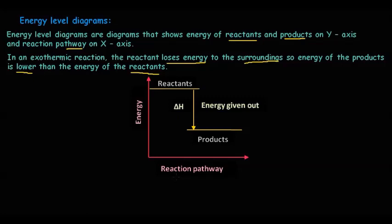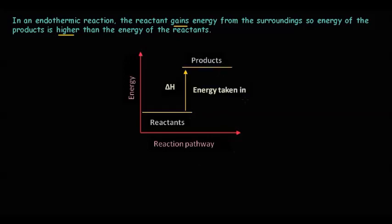Similarly, an endothermic reaction can be represented by an energy level diagram. Here the reactants gain energy from the surroundings, so the energy of the products is at a higher level than the reactants. The energy of the reactants is at a lower level and the products at a higher level. The change in energy is the energy taken in from the surroundings, also represented by ΔH.